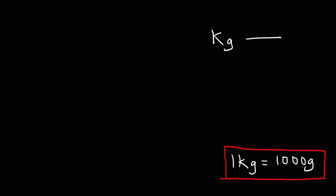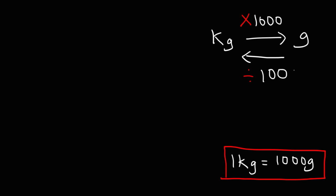So if we want to convert from kilograms to grams, all you need to do is multiply by 1,000. And if you wish to convert from grams to kilograms, what you need to do is divide by 1,000. So that's the quick and simple way to get the answer.